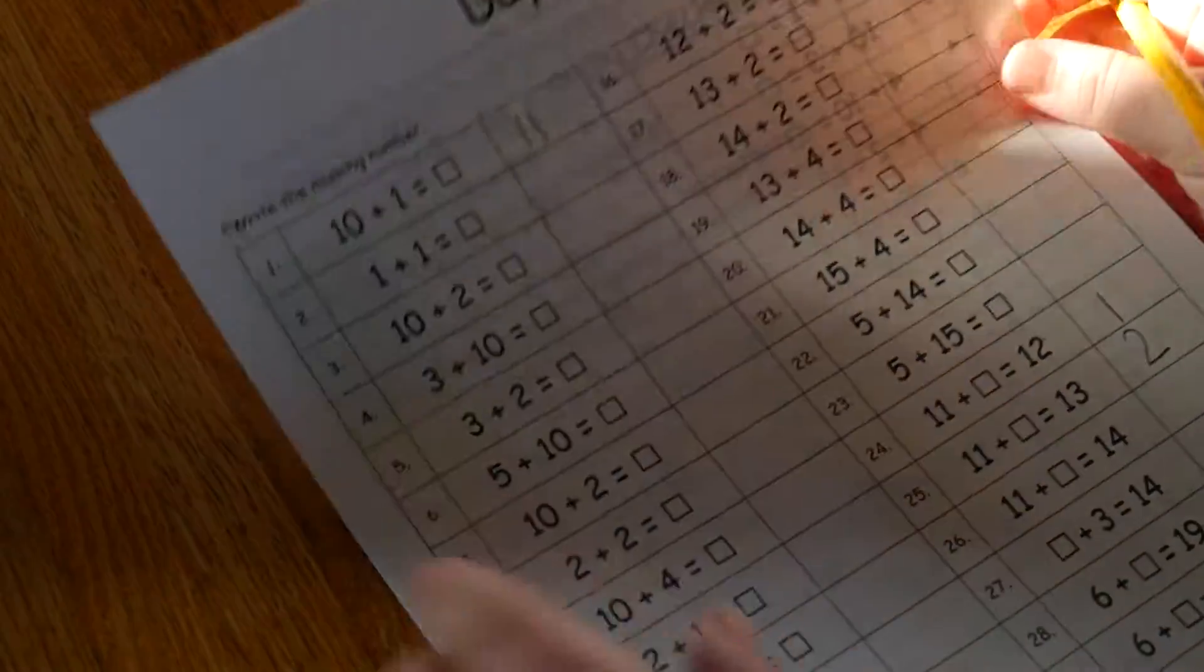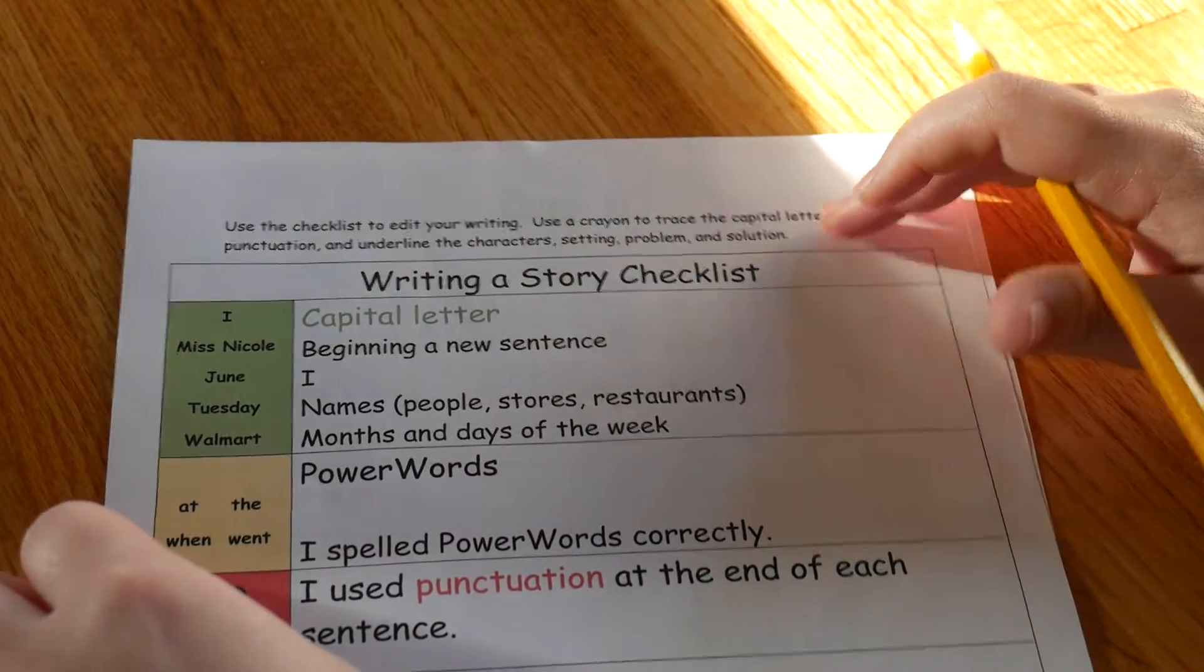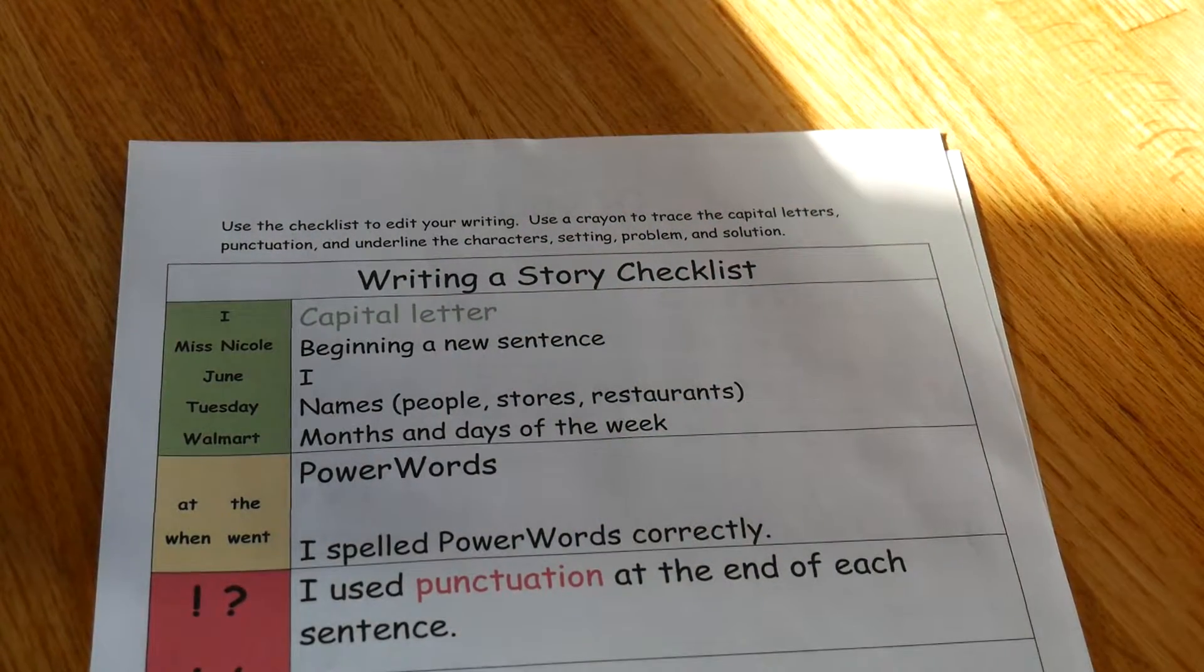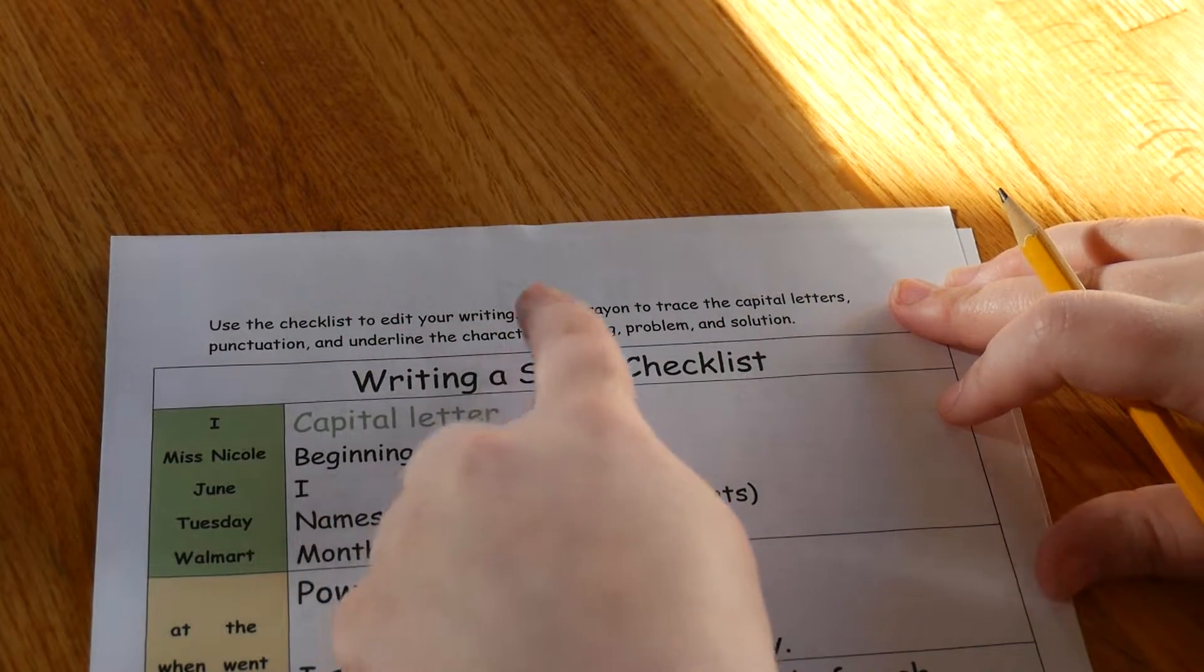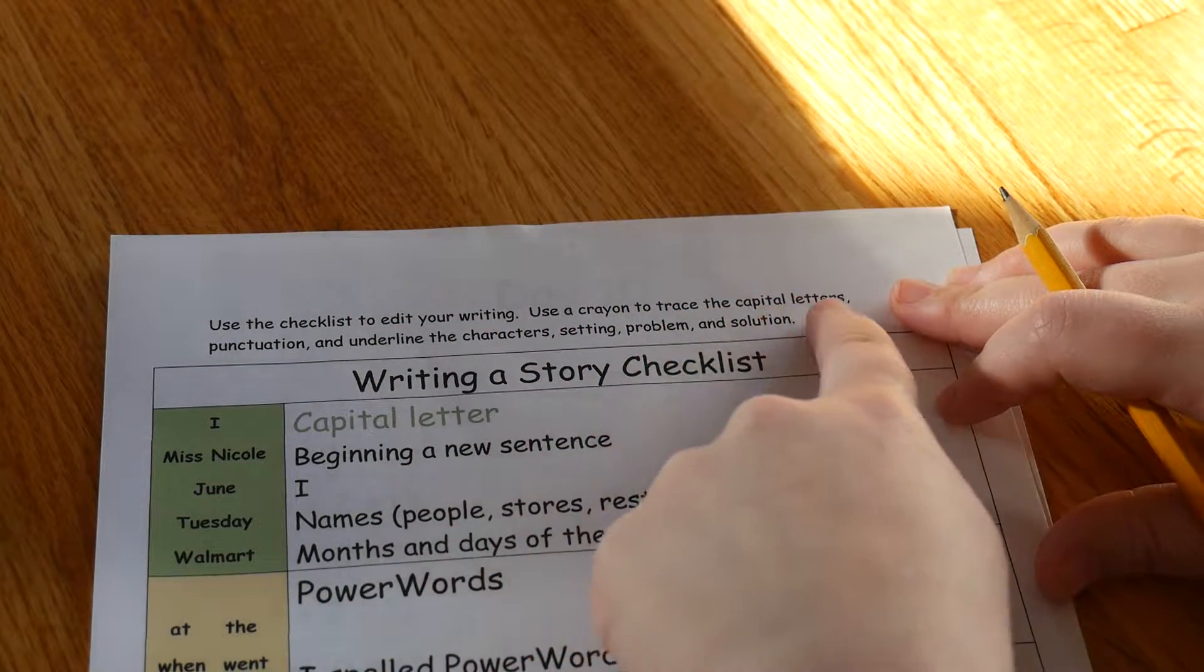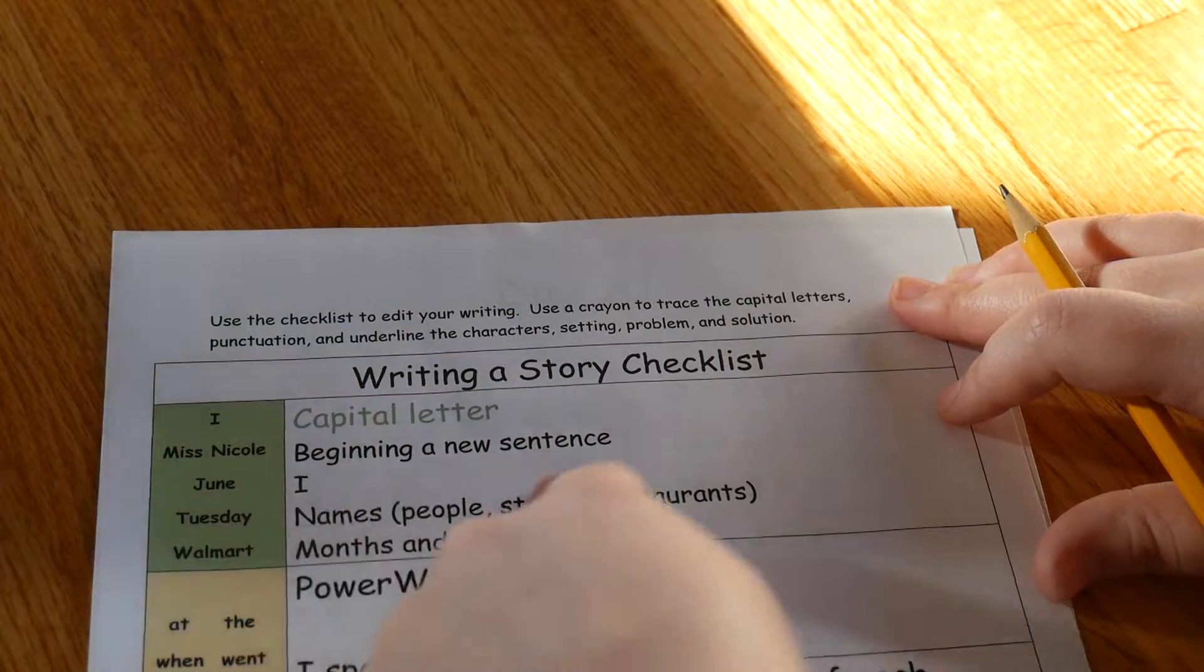And then you're using your story checklist for your writing today. The directions say: use the checklist to edit your writing, use a crayon to trace the capital letters in green just like it is here, the punctuation in red.